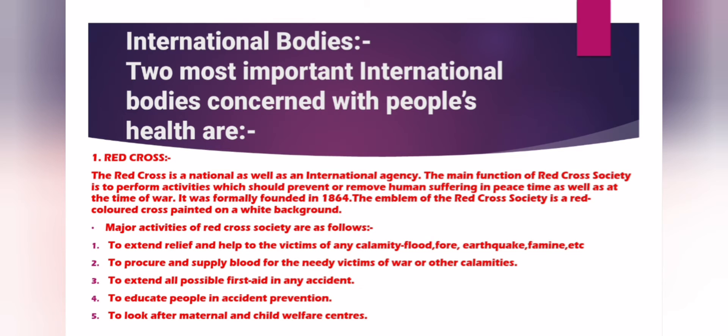The emblem of the Red Cross Society is a red-colored cross painted on a white background. Now, the major activities of the Red Cross Society are as follows. The first is to extend relief and help to victims of any calamity — such as flood, fire, earthquake, and famine.